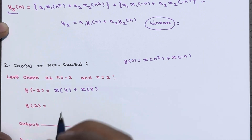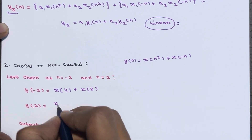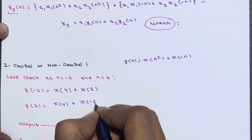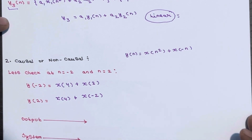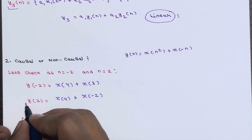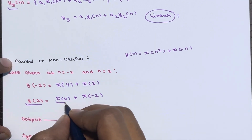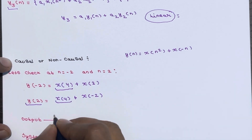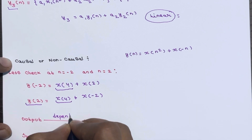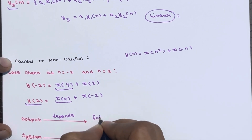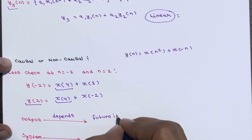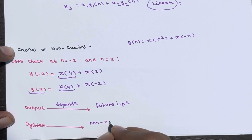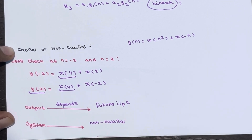Now calculate y of 2. At n equals 2, we need x of 4, which is a future input. Your output depends on a future input, so your system is non-causal.